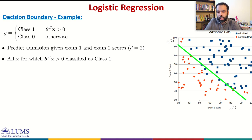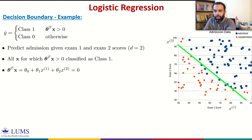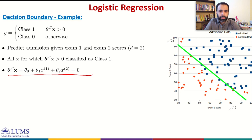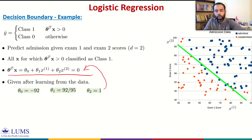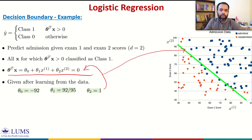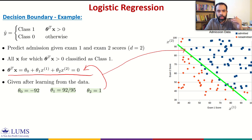All X for which theta transpose X is greater than 0 are classified as class 1 — admitted. We have a two-dimensional space so the decision boundary is a line given by theta 0 plus theta 1 X1 plus theta 2 X2 equals 0. Assuming we have learned parameters from training data — theta 0 = -92, theta 1 = 92/95, theta 2 = 1 — substituting gives the green decision boundary line. Anything to the right has theta transpose X greater than 0 (class 1); anything to the left has theta transpose X less than 0 (class 0).